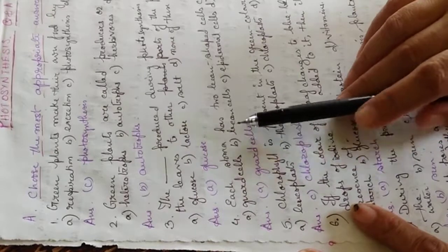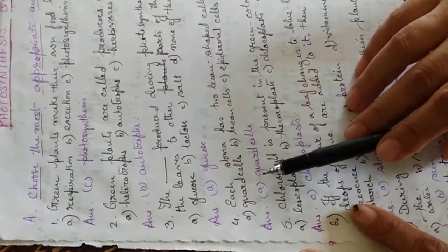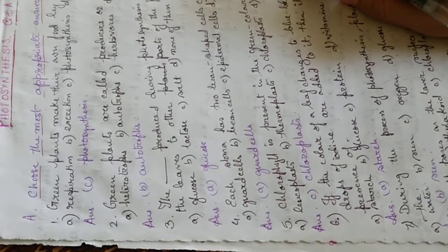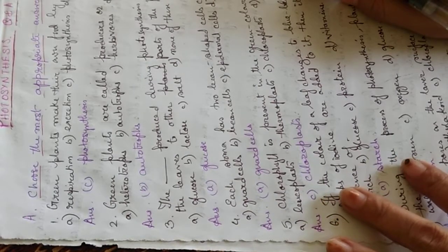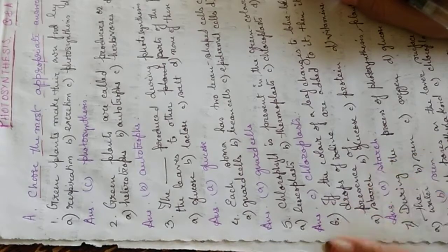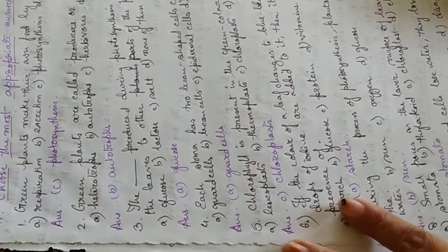Each stoma has two bean-shaped cells called - options are guard cells, bean cells, epidermal cells, and cuboidal cells. The answer is guard cells.